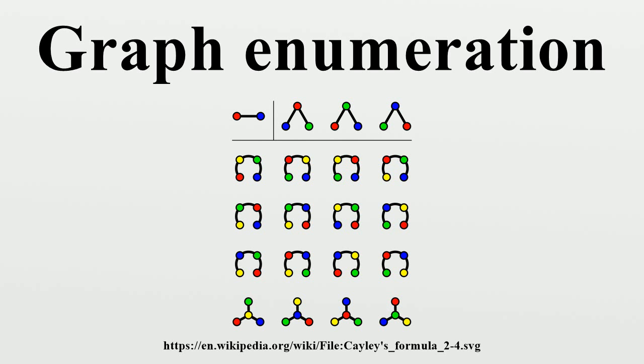The number of labeled n-vertex undirected graphs is 2^(n choose 2).